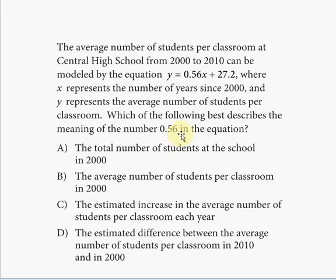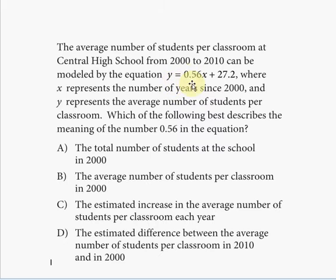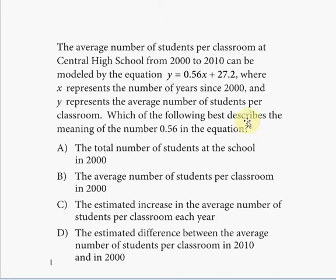The question asks which of the following best describes the meaning of 0.56 in the equation. The first thing to notice is that this is a linear equation — we know because x has a power of 1. X is the independent variable and y depends on x. What a linear equation means is that for a fixed unit change in x, the horizontal variable, there is a fixed change in y, the vertical variable.